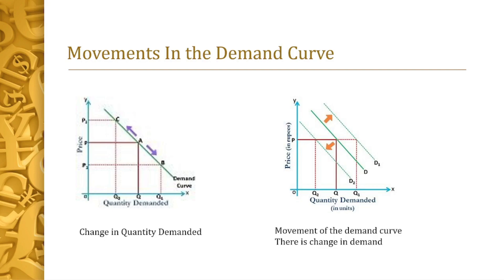Now if the demand curve pushes back — meaning it shifts left — what causes this? Probably there is a natural disaster; people don't have money, so demand will decrease. You will only have Q2, probably around 10,000 units sold in the Philippines, whereas at the original demand D at the same 100,000-peso price, you would normally sell 20,000 units.